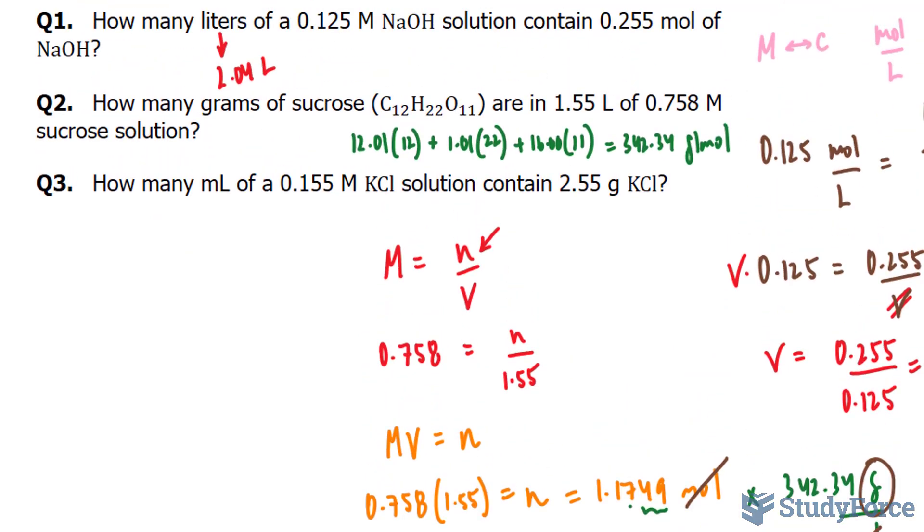Finally, in question three, we're asked: how many milliliters of 0.155 molar KCl potassium chloride solution contains 2.55 grams of KCl? This is kind of the opposite of question number two.